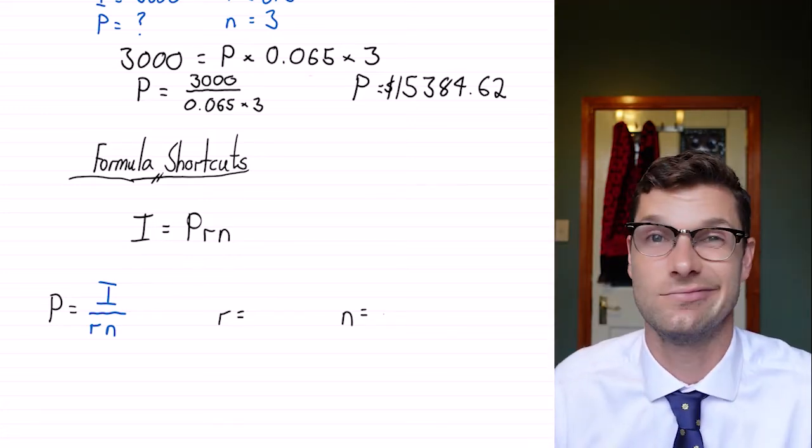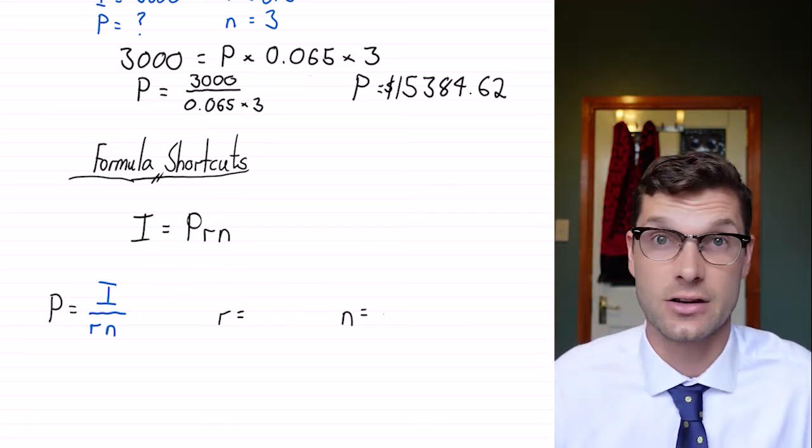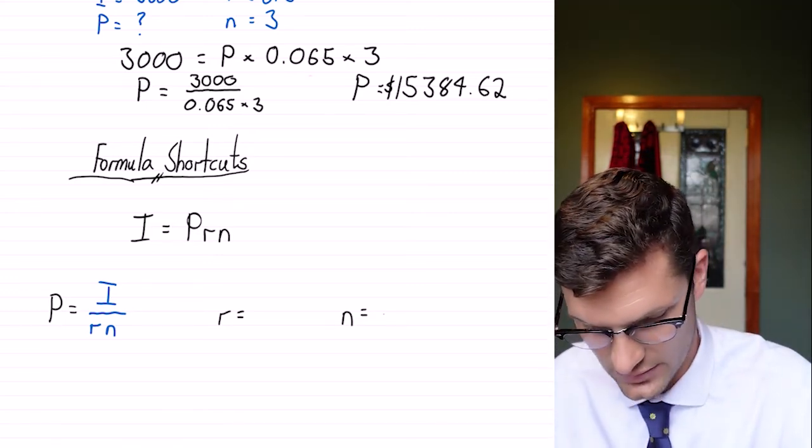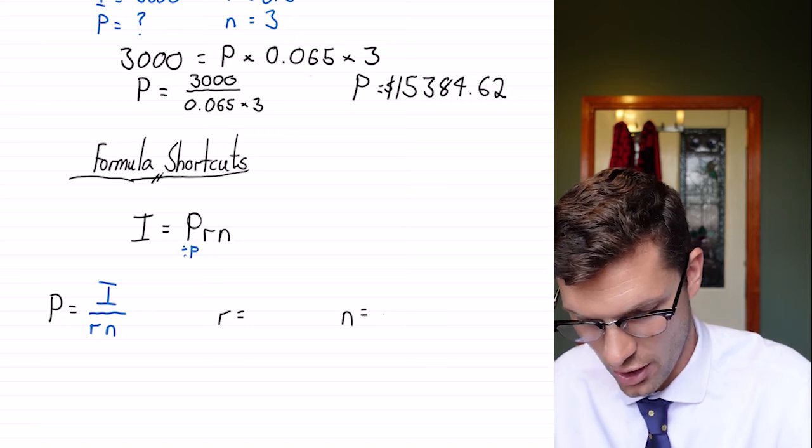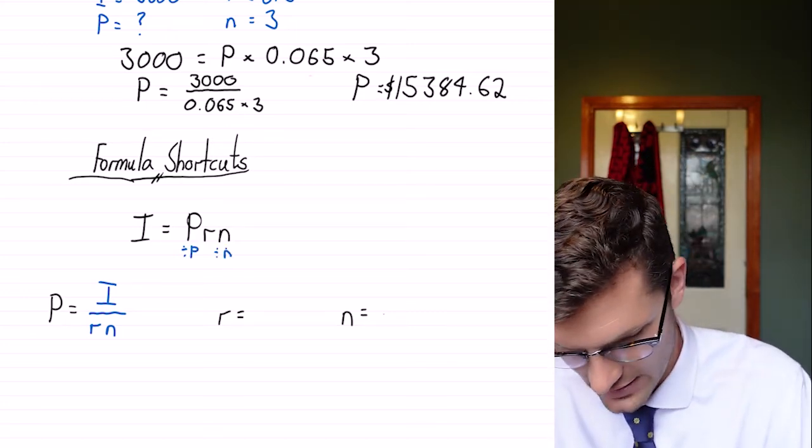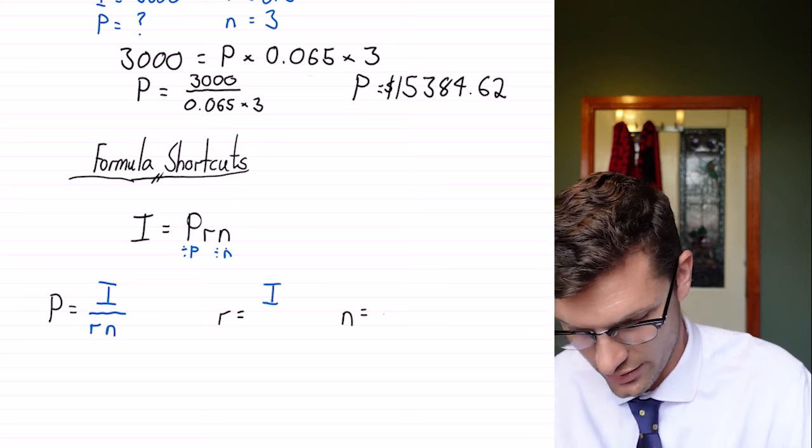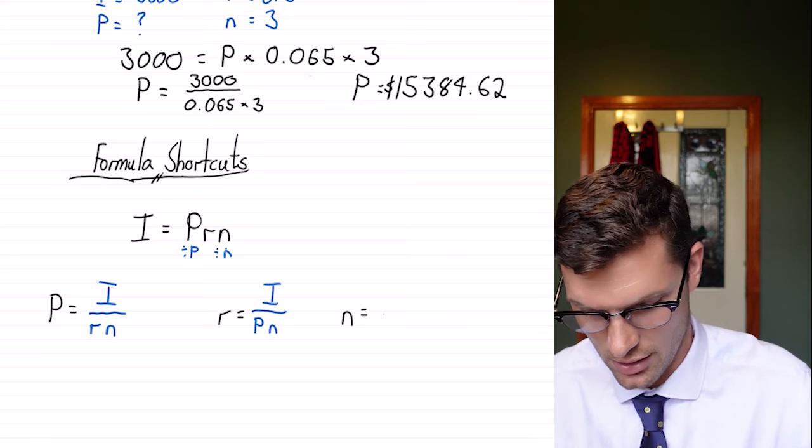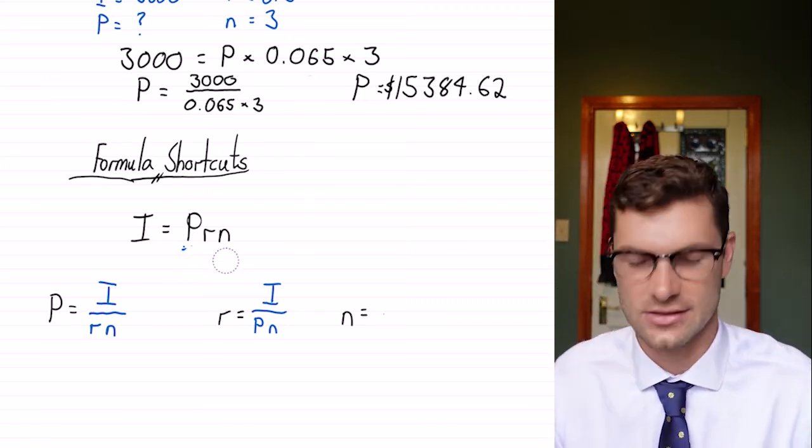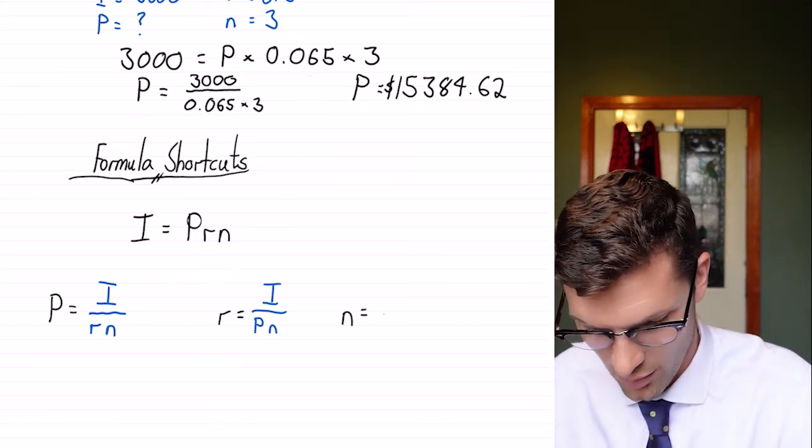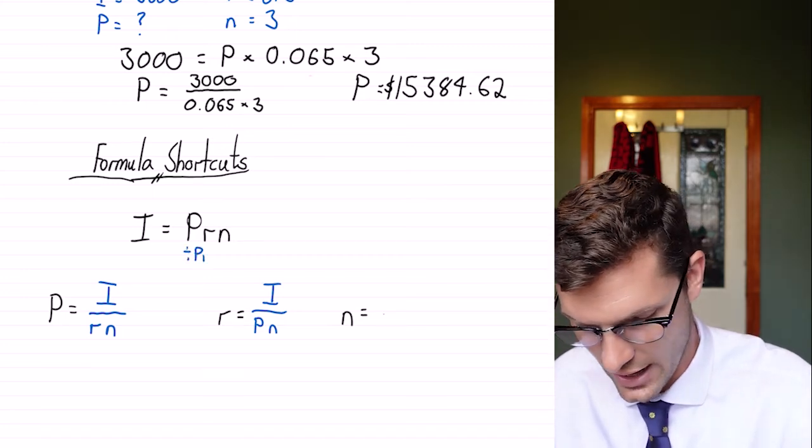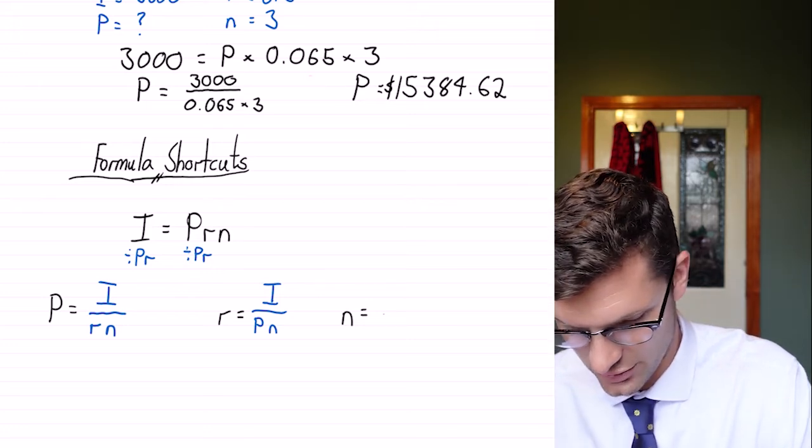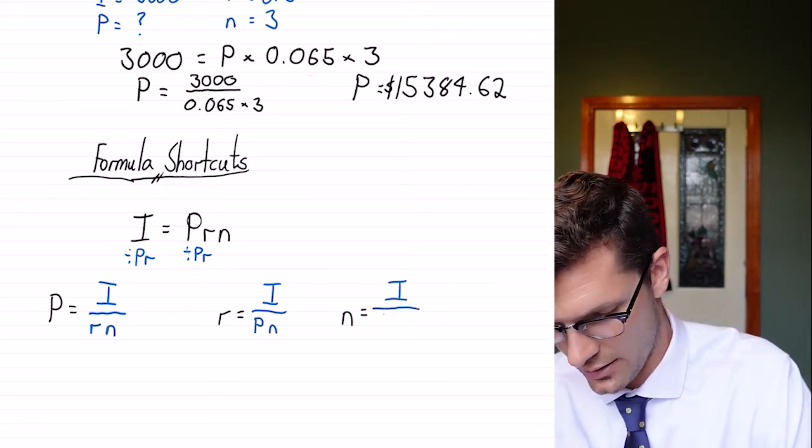Excitingly, once you've got that, that's all you need to know. If I wanted to find R by itself, because it's P times R times N, I would have to divide these two terms off. So to find R by itself, I have the interest divided by P times N. And unsurprisingly, to find this last one, N, all you've got to do is divide it by P times R. So to find the number of periods, it's interest divided by P times R.